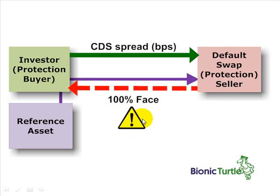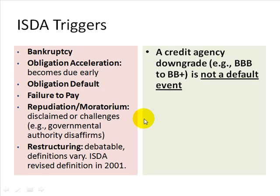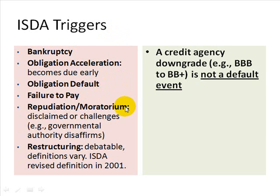That depends on the contract between the two counterparties. However, the International Swaps and Derivatives Association has standardized certain terms that constitute the triggers. And so we have bankruptcy, obligation acceleration, obligation default, failure to pay, repudiation, and the most controversial element: restructuring.